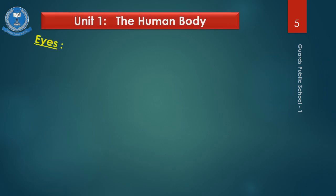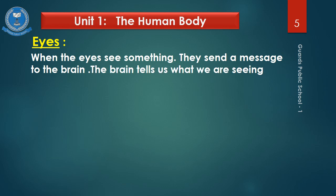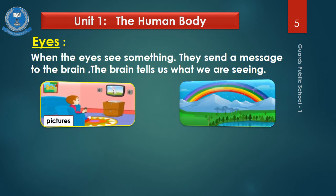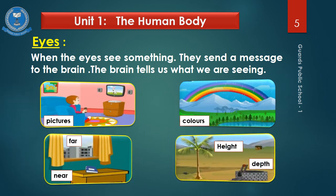Now we will talk about eyes. The eyes are one of the most important organs of our body. When the eyes see something, they send a message to the brain, and the brain tells us what we are seeing. We can see around us through our eyes — the pictures, the shape of things, the colors of things, the distance between things, and the height and depth of things.